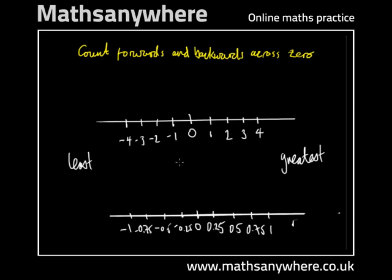So we're counting down from the greatest number to the least. On the top number line, we've got 4, 3, 2, 1, 0, minus 1, minus 2, minus 3, minus 4, with one integer value intervals between each point on the number line.